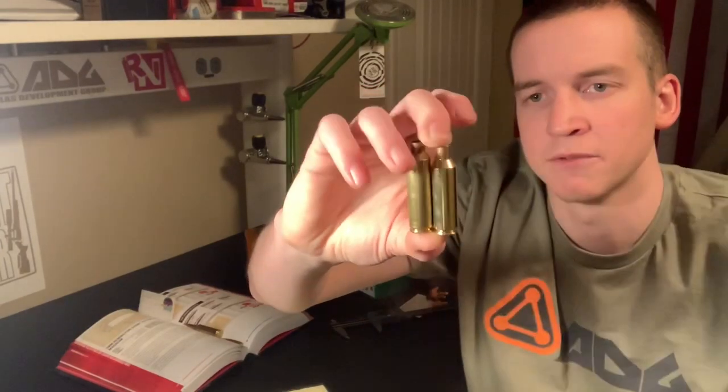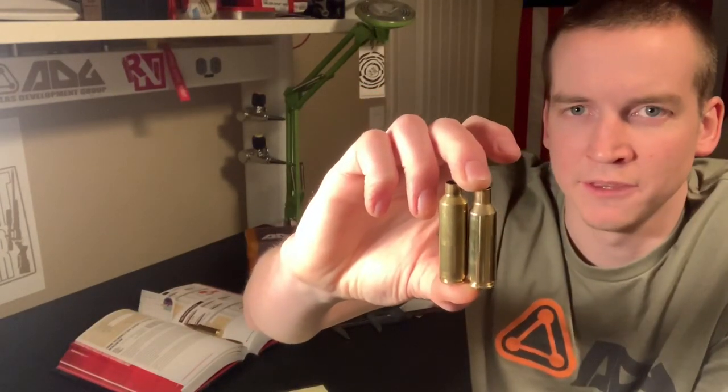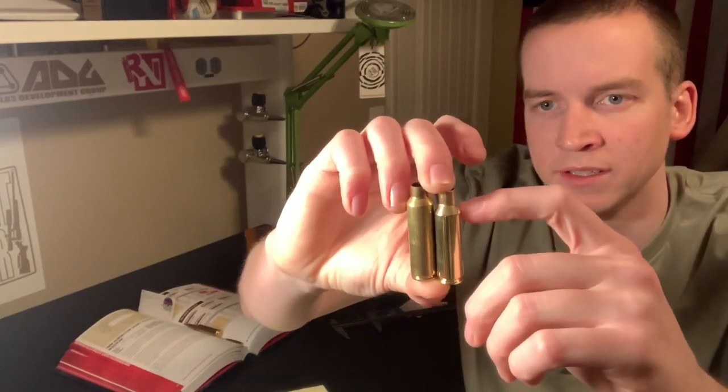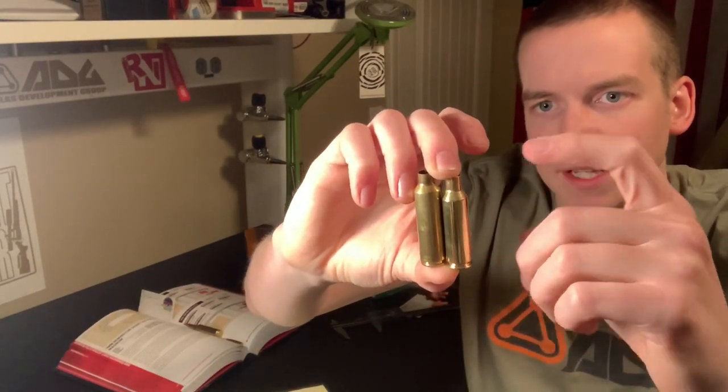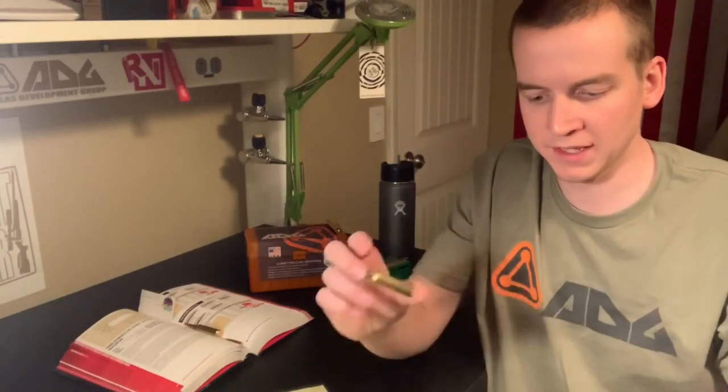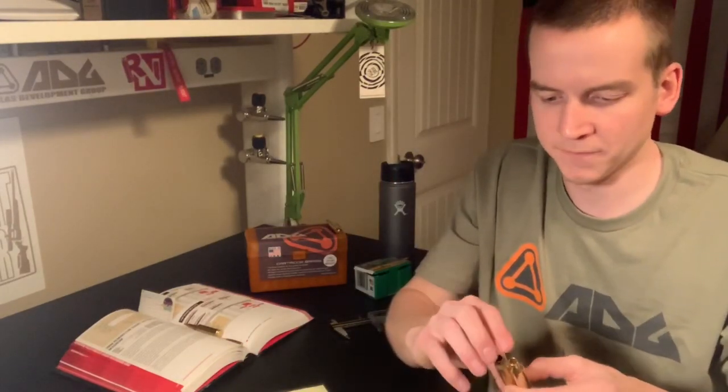And the shoulder angle on the short action ultra mag is a 30 degree shoulder. When I first got the WSM, that was one of the reasons for me choosing that, is it should help stop case stretch when you're shooting.